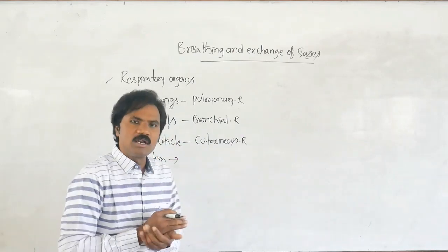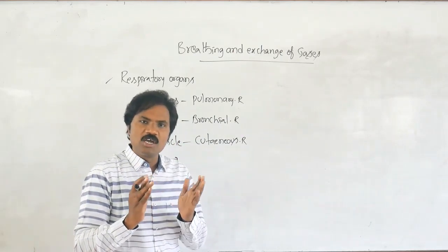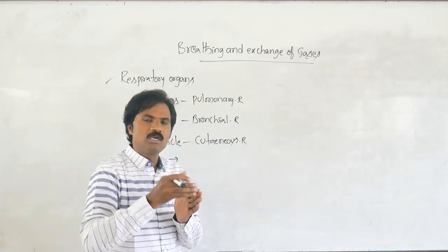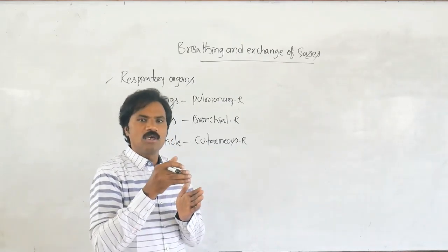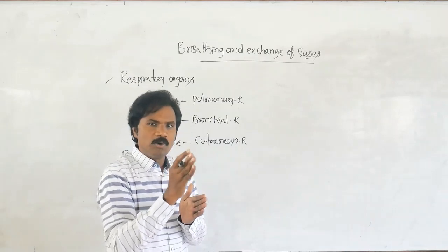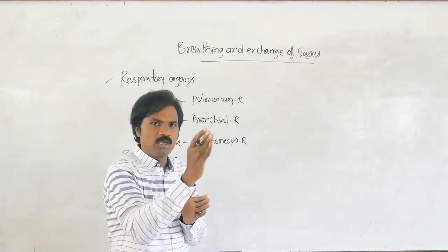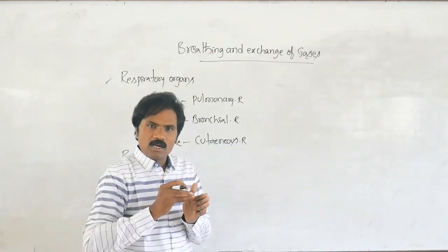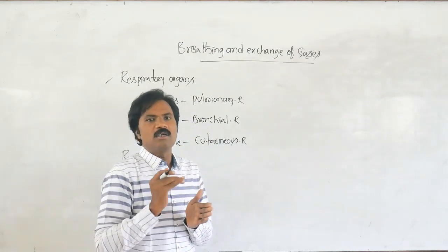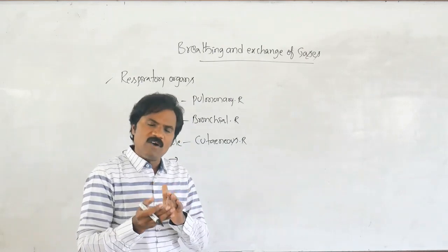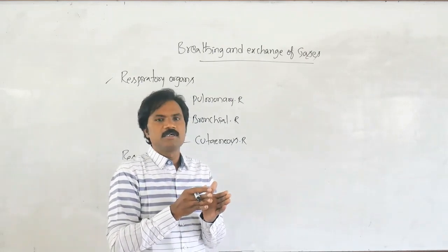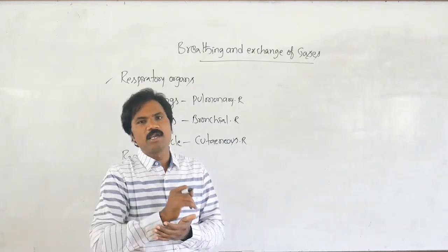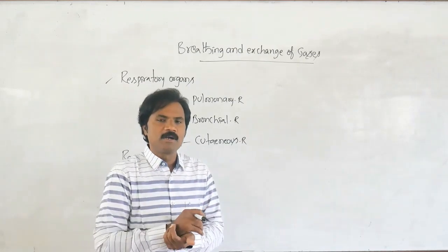Respiration involves exchanging of gases, utilization, and transportation. In simple order: atmospheric air enters, passes across the alveoli, then transportation via blood, then diffusion between blood and tissues. This systematic order must be remembered.